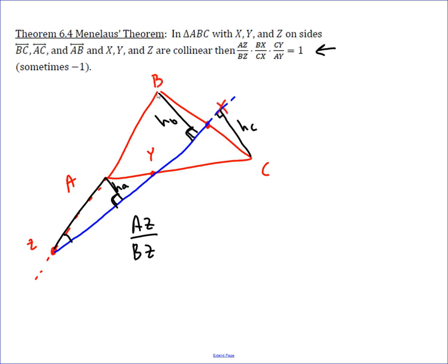So that means AZ over BZ, the hypotenuse of these right triangles, is going to be equal to the two altitudes, HA over HB.